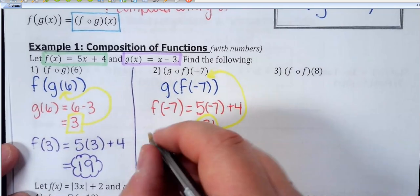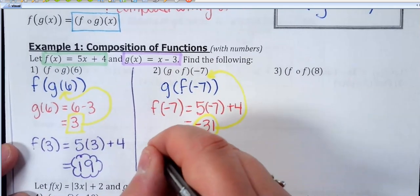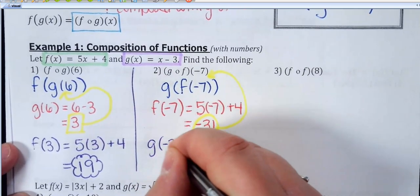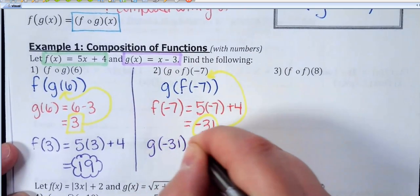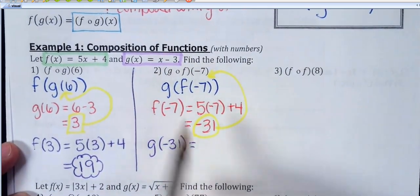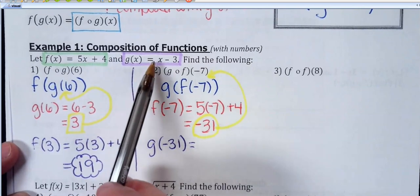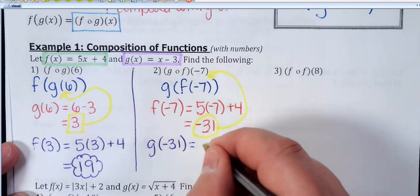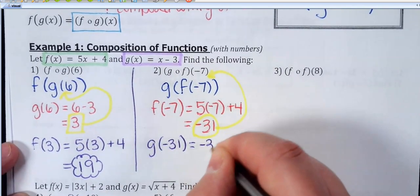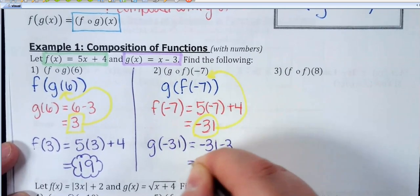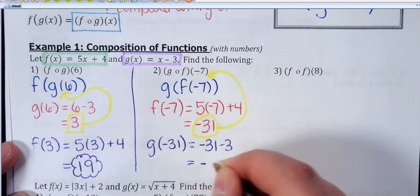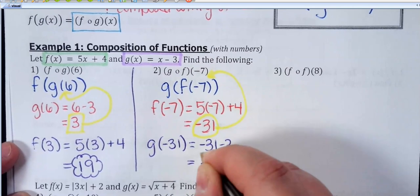Once you get that number, you substitute it in for f of negative 7, because f of negative 7 equals negative 31. The actual answer comes from plugging that into the g function. So g of negative 31: the rule is x minus 3, so it's negative 31 minus 3, which gives us negative 34.